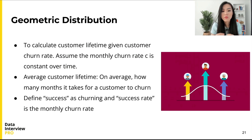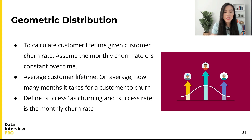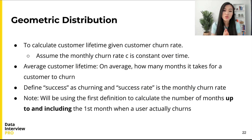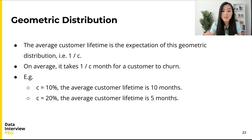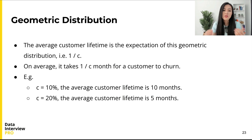The geometric distribution is commonly used in practice, and one common use case is to calculate customer lifetime given a customer churn rate. Suppose the monthly churn rate is c — it refers to the proportion of existing customers who churn in a month, assumed constant over time. We want to find, on average, how many months it takes for a customer to churn. We define success as churning, and our success rate is the monthly churn rate c. Using the first definition of the geometric distribution, the expected value — and thus the average customer lifetime — is 1/c. So if c is 10%, the customer lifetime is 10 months; if c is 20%, the customer lifetime is 5 months.